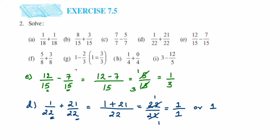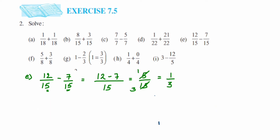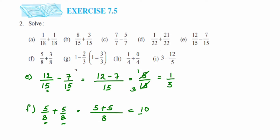Next, in problem f we have 5 by 8 plus 5 by 8. Again it's an addition and the denominators are the same. Write down 8 in the denominator and add the numerators: 5 plus 5 gives us 10, so we get 10 by 8. We can cancel using the two times table — 2 fours are 8 and 2 fives are 10 — so the answer is 5 by 4.